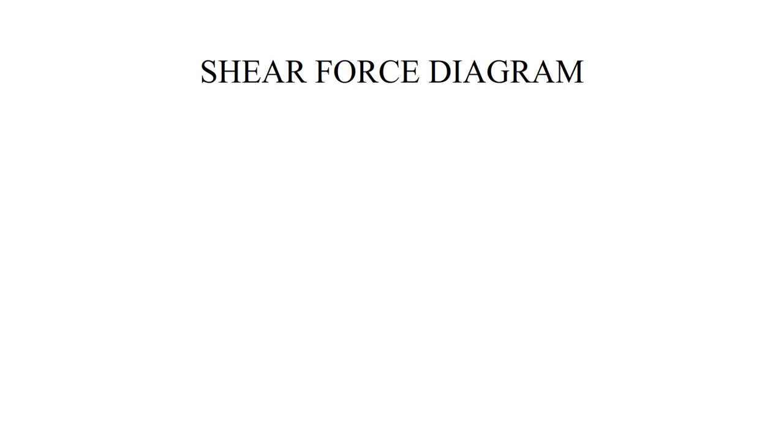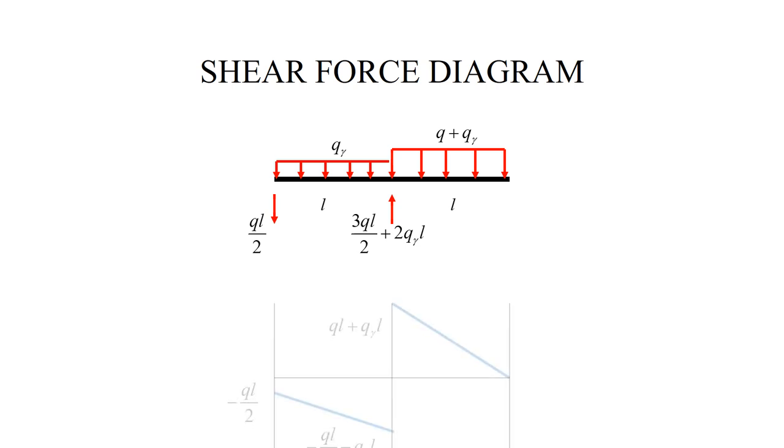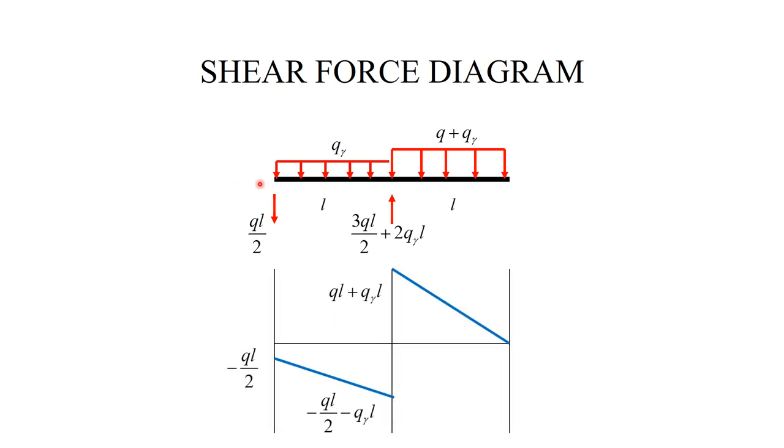Now, let me first construct the shear force diagram. So, to this end, I just copy the free body diagram for the entire beam, and I will construct shear force diagram quickly by observing that at this end, the shear force is equal to minus Q L over 2. And then, from this point, it proceeds with the slope minus Q gamma.